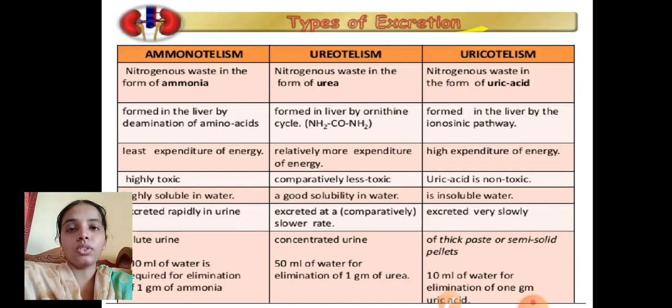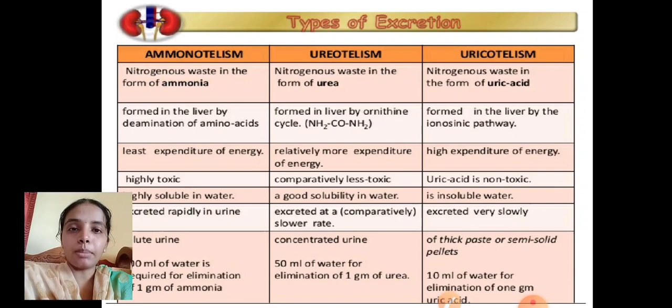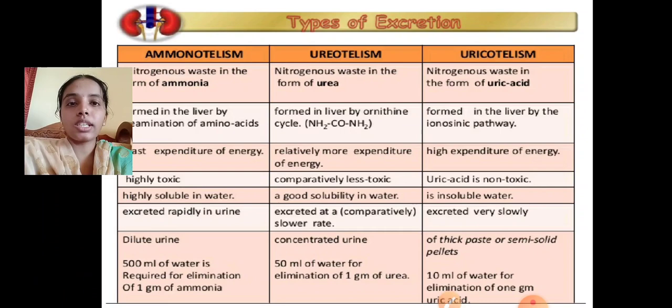Ammonotelism refers to organisms which eliminate nitrogenous waste in the form of ammonia. Ammonia is formed in the liver by the deamination of amino acids. It involves the least expenditure of energy. Ammonia is highly toxic and highly soluble in water, so it is excreted rapidly in urine.